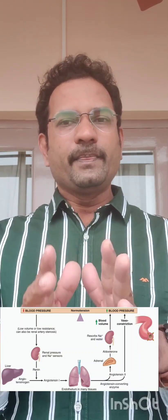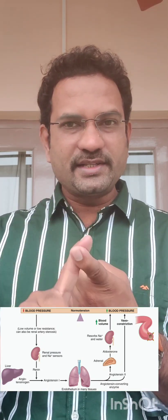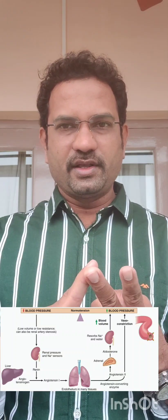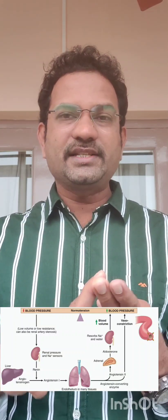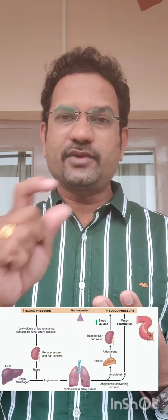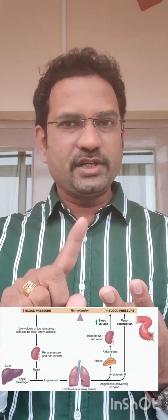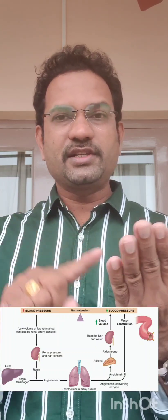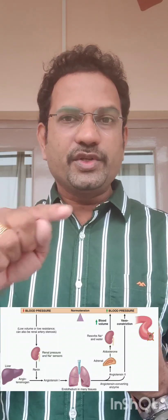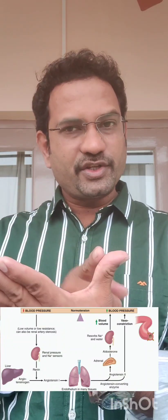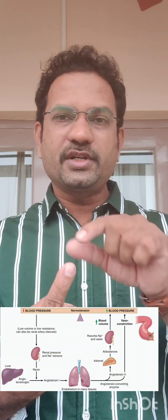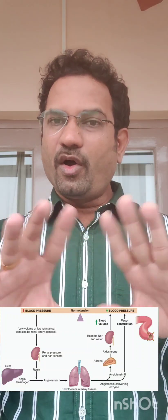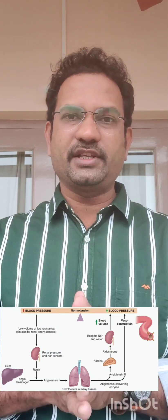The important points to remember: the kidney releases renin, the liver releases angiotensinogen, and the endothelial cells of vascular tissue and lungs release angiotensin converting enzyme. The functions of angiotensin 2 are vasoconstriction and increasing blood volume via aldosterone release. Aldosterone is a mineralocorticoid that increases sodium and water retention. All of these are potential exam questions.